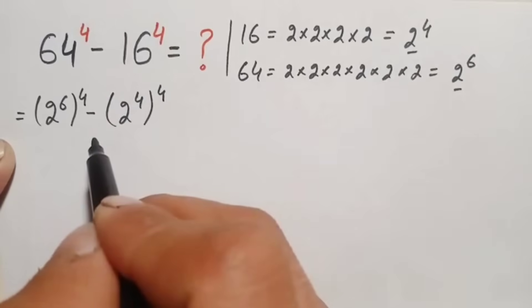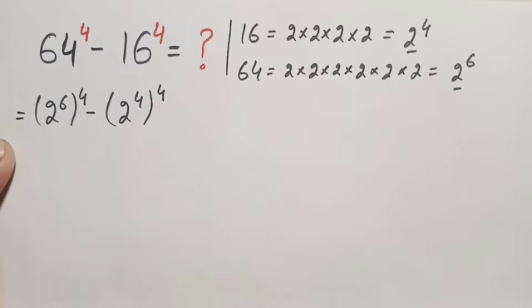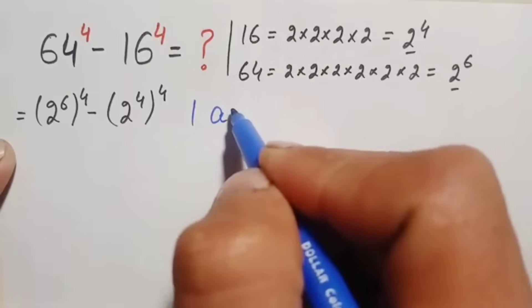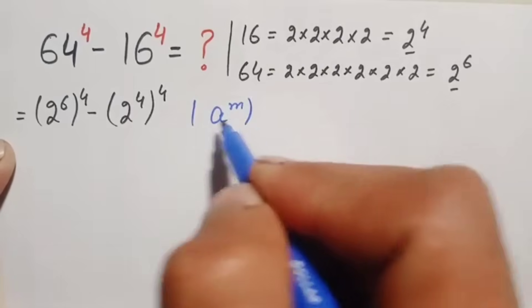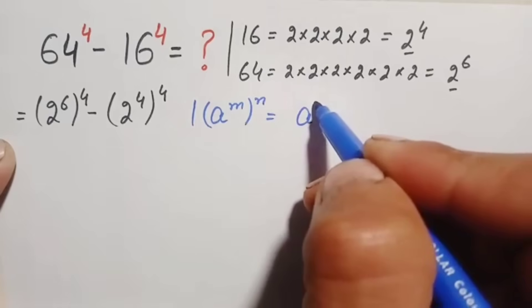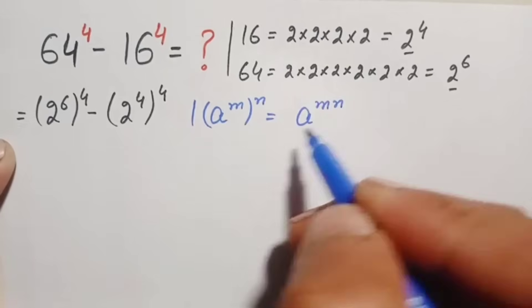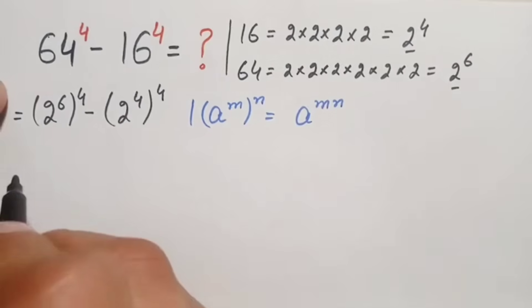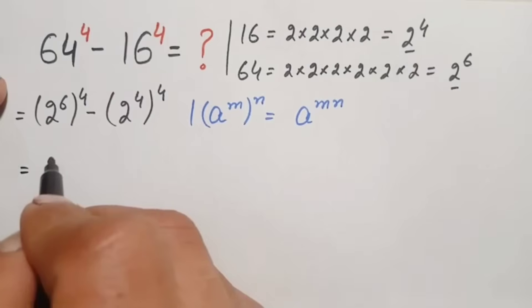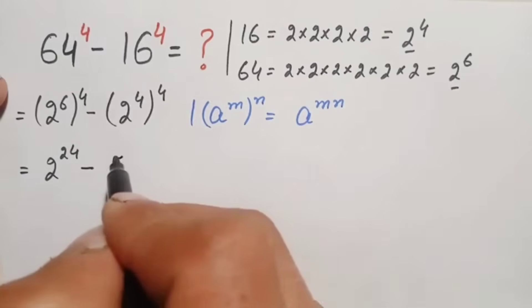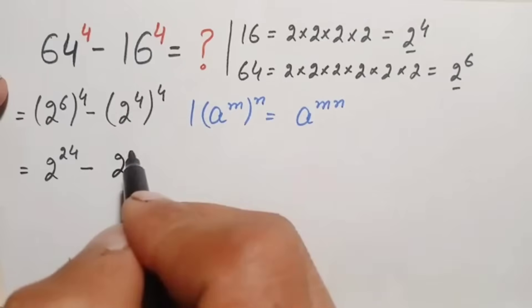In these two terms we use the exponential identity: a raised to power m, whole raised to power n, equals a raised to power m times n. Applying this identity, the expression becomes 2 raised to power 24 (since 6 times 4 is 24) minus 2 raised to power 16 (since 4 times 4 is 16).